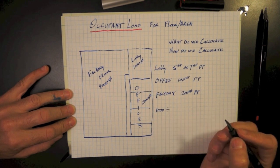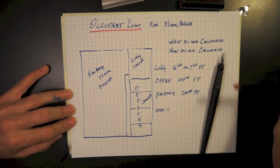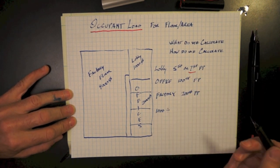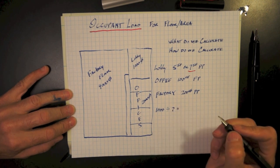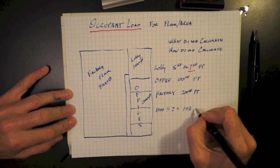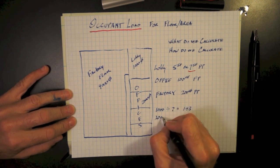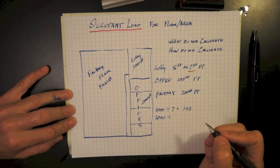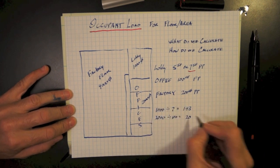So let's take the lobby at 1,000 square feet, divide that by 7. That equals 143 people in that lobby space that it could hold. 2,000 square feet for the offices, divided by 100, that gives us 20 people.